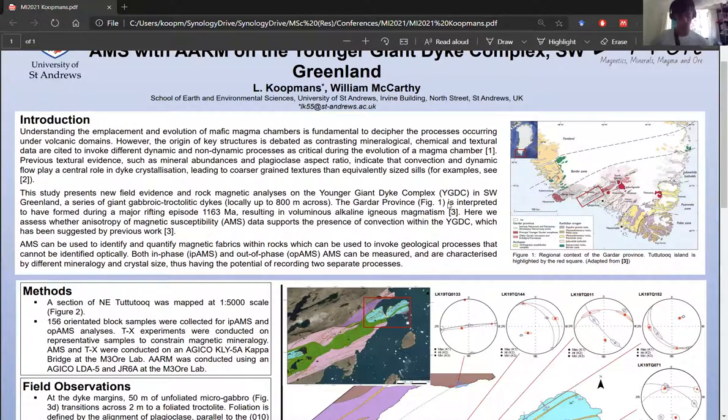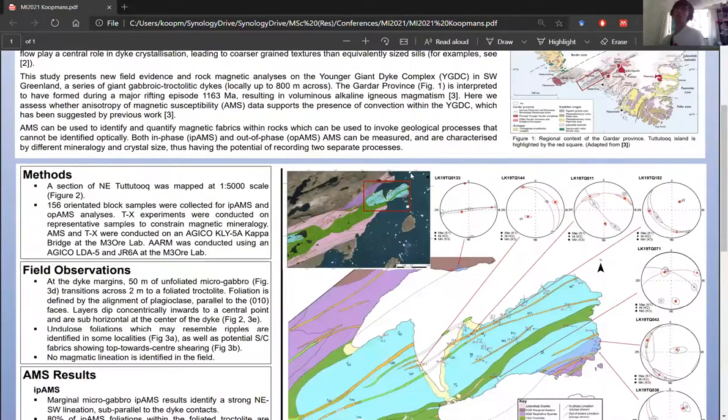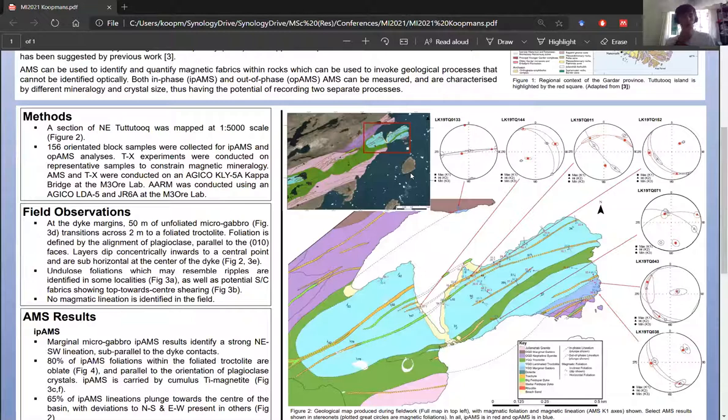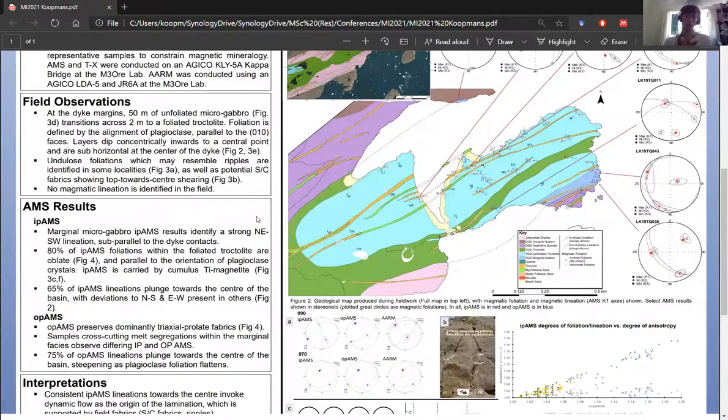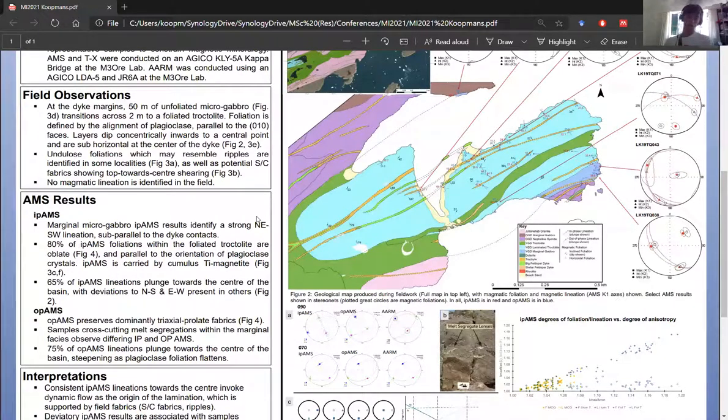And I've particularly been trying to figure out their emplacement history and post-emplacement mechanisms that have occurred by using rock magnetics. And so I titled it, trying to decipher the primary flow from interstitial melt migration. So I went out to Greenland to map, collect samples, and then did a bunch of petrography and rock magnetics. And I've been trying to integrate a model or try to produce a petrogenic model of the system. So I've been trying to integrate the in-phase AMS and out-phase AMS using other rock magnetic techniques, such as susceptibility experiments and ARM to try and figure out what magnetic clusters that these different experiments are measuring.